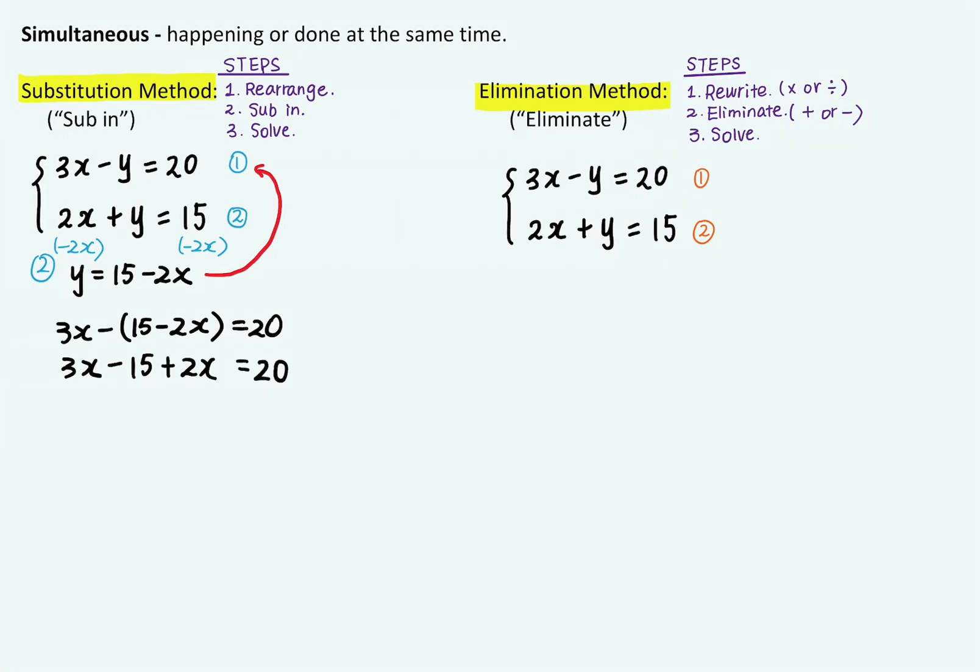Now let's collect like terms. Since I have 3x and 2x, altogether I have 5x minus 15 equals 20.